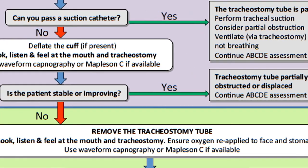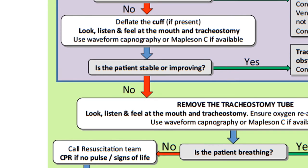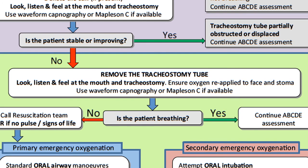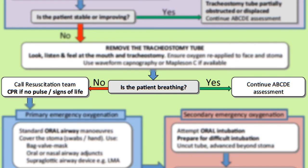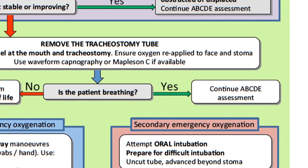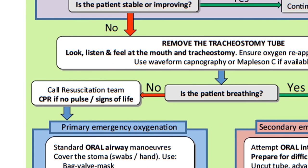If you find that the suction catheter does not pass and deflating the cuff doesn't improve the patient's condition, then the tracheostomy tube is completely blocked or displaced and the patient can't breathe around the tube. In response to this, you will need to remove the tracheostomy tube and reassess at the mouth and tracheostomy with your look, listen and feel. Also reapply oxygen to the face and the stoma. If the patient is breathing, continue with your ABC assessment. If they are not breathing, assess for signs of life and start CPR if necessary.